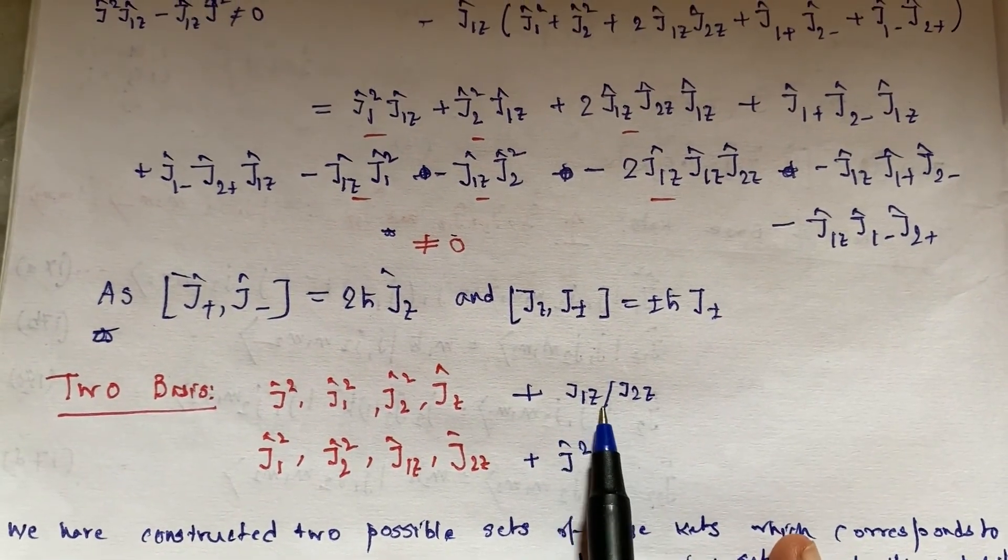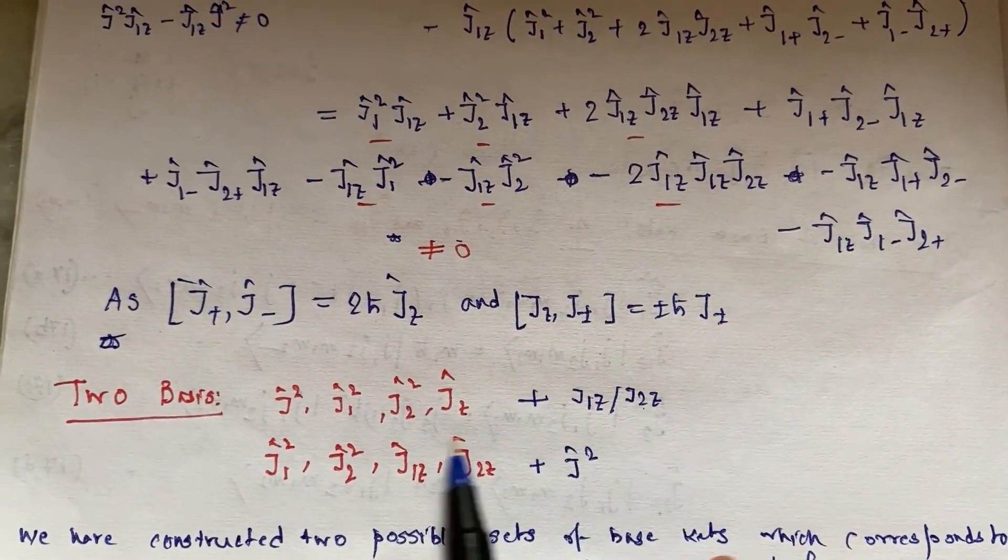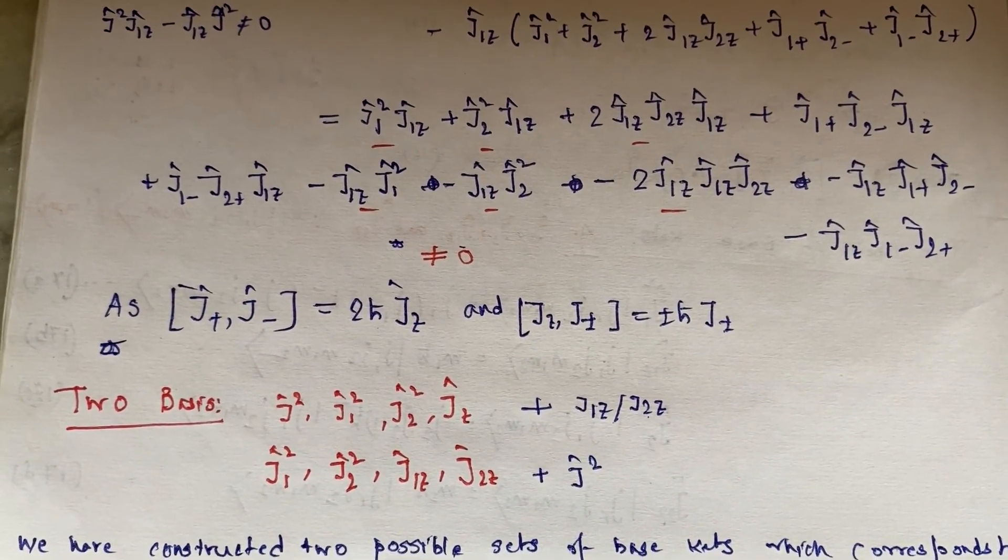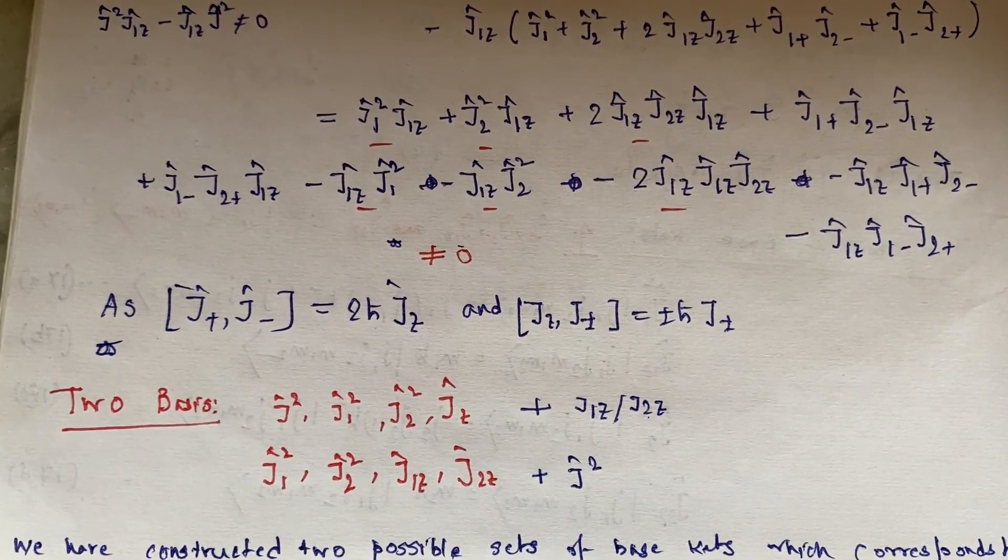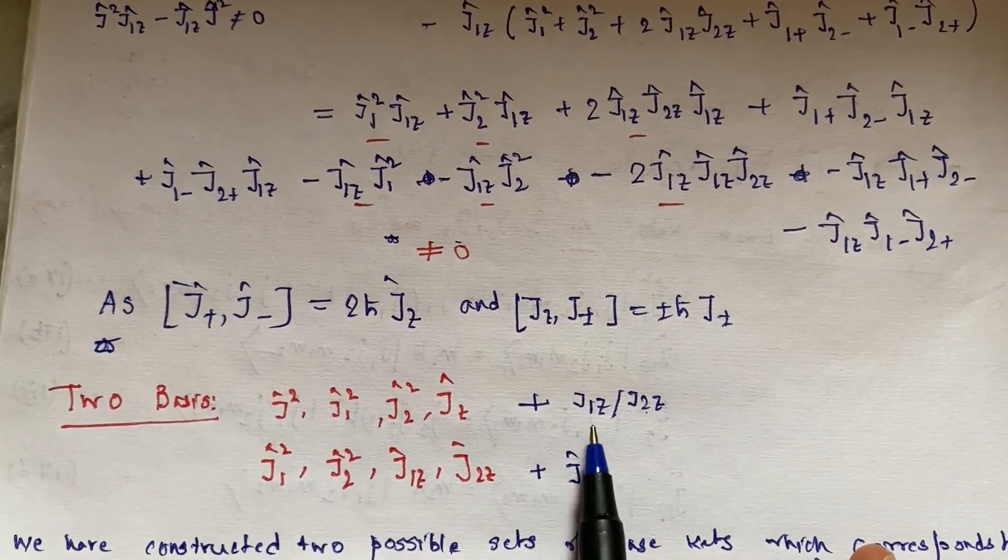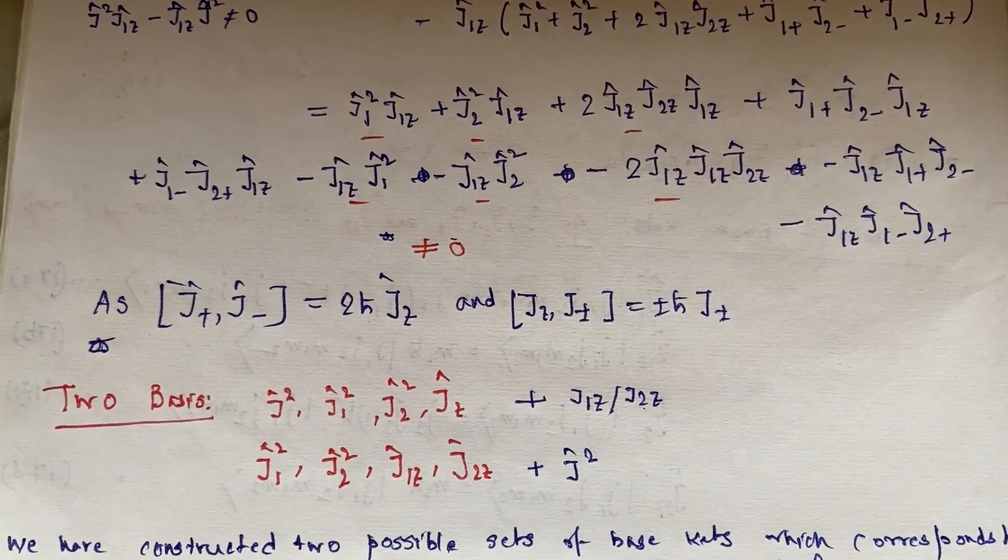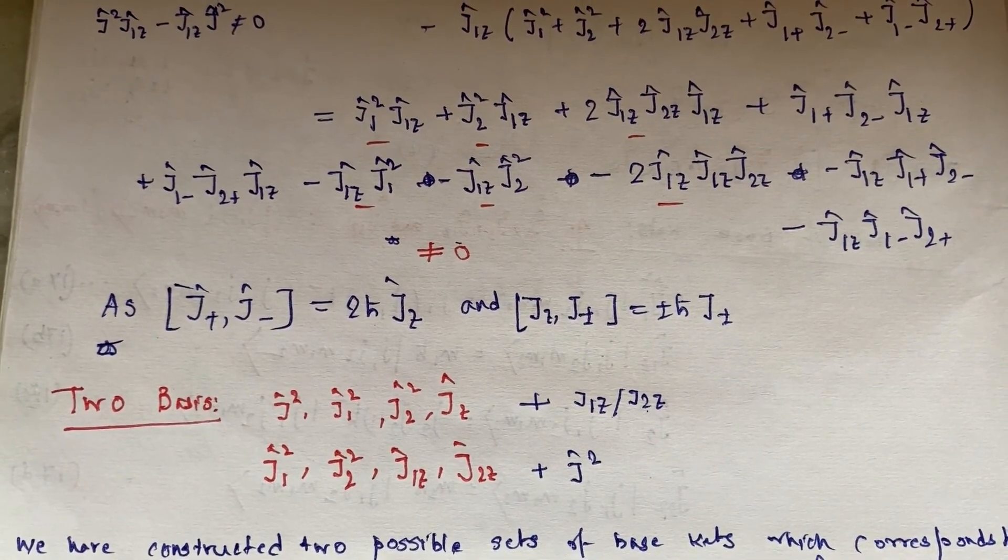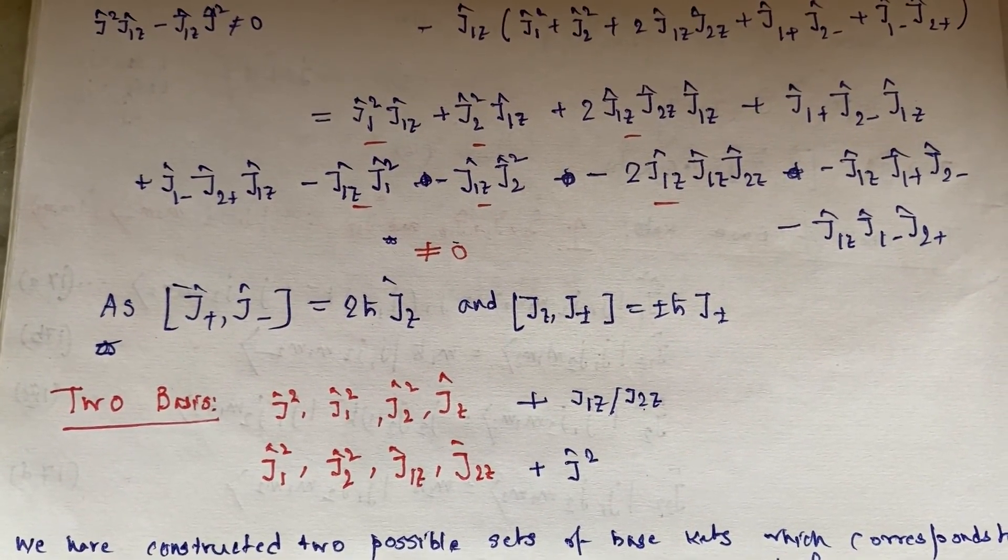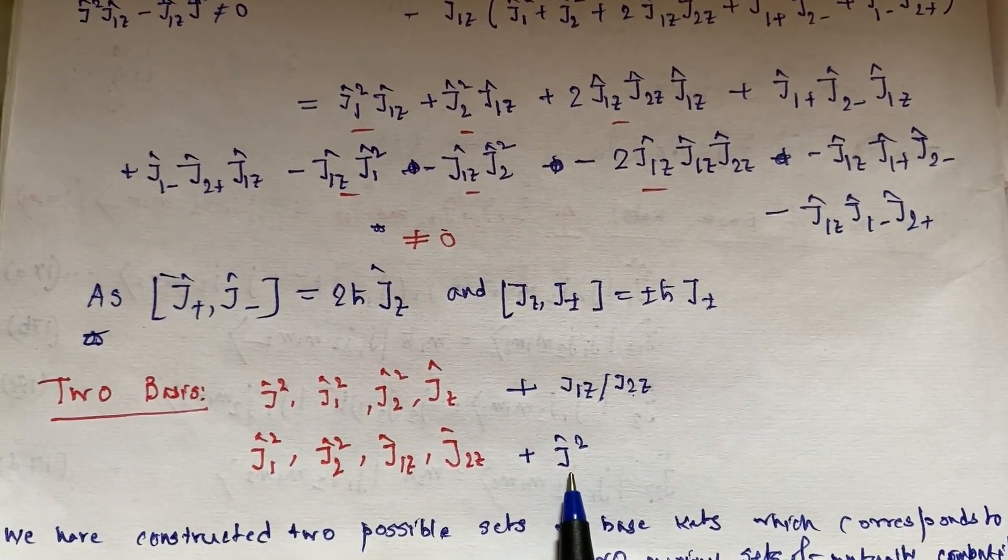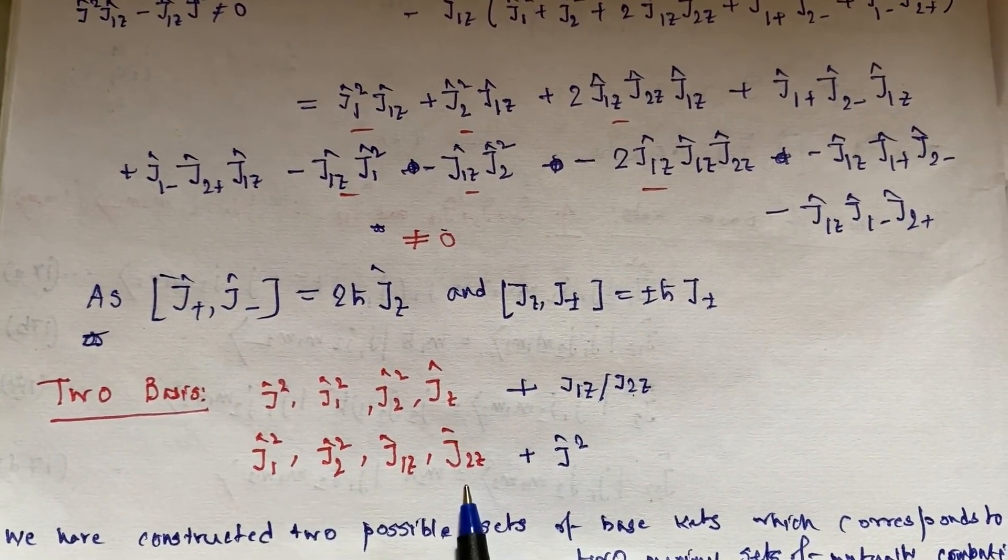Because as J₁z or J₂z does not commute with J², we will not be able to have simultaneous eigenkets of J² and J₁z or J₂z. So how can we construct the basis if we do not have simultaneous eigenkets? Similarly, we cannot add J² in this basis also.